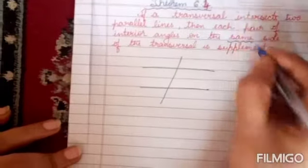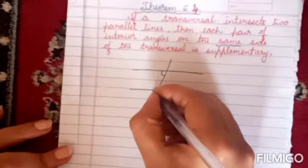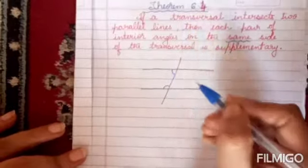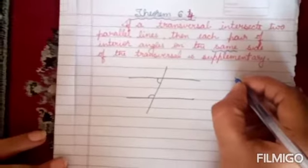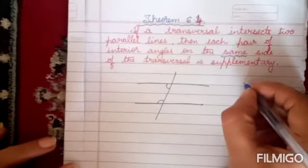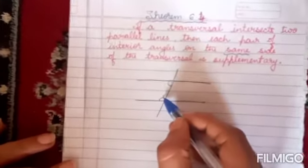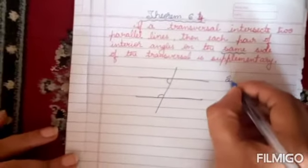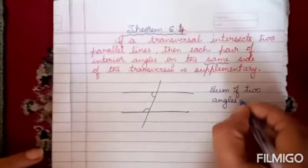Did you notice here? On the same side. Each pair of interior angles on the same side of the transversal is supplementary. Supplementary means sum of 180 degrees. When the sum of two angles is 180 degrees, it is known as supplementary.